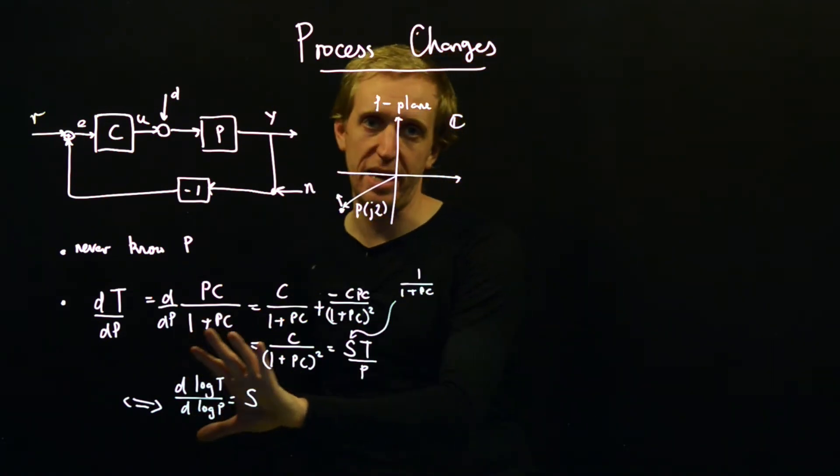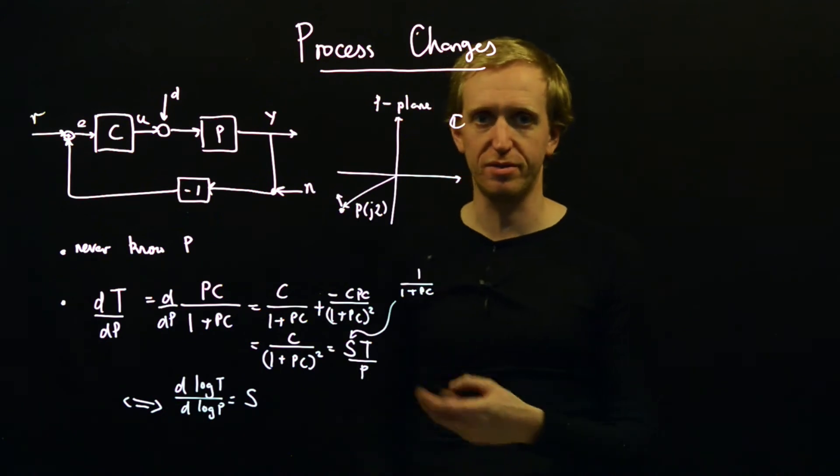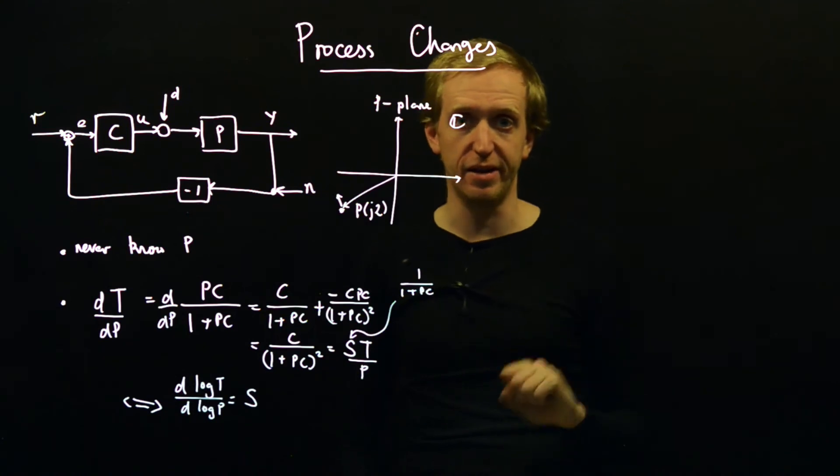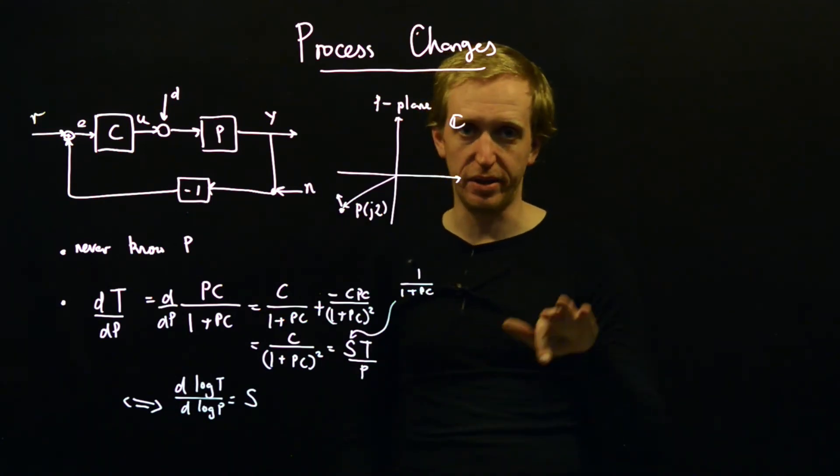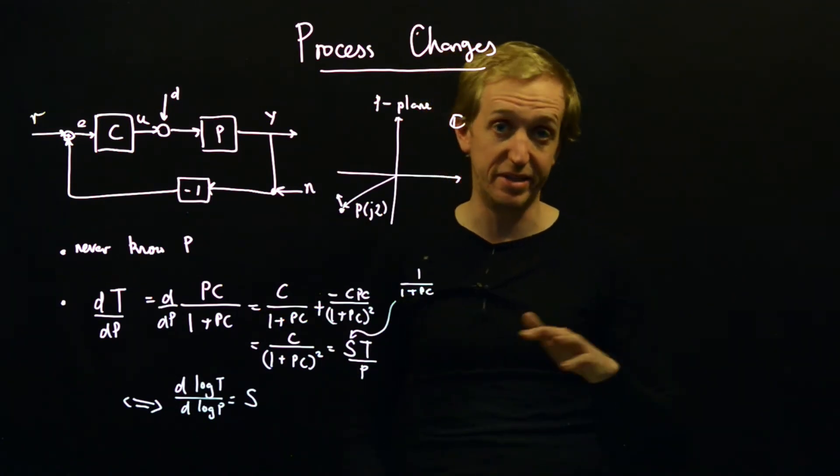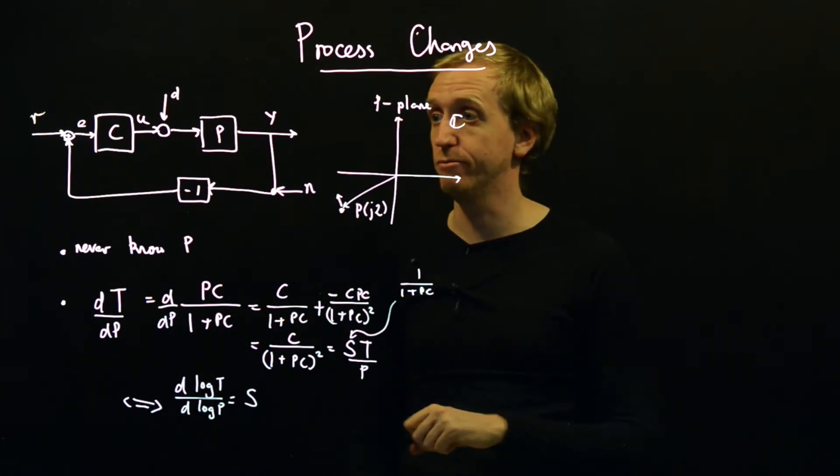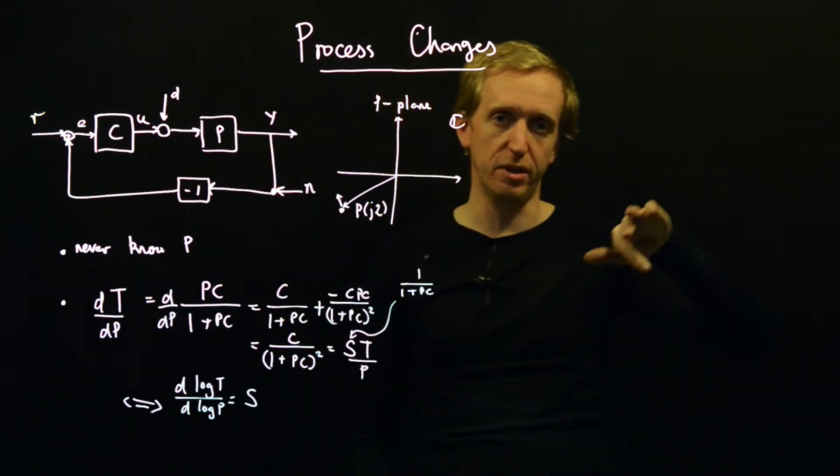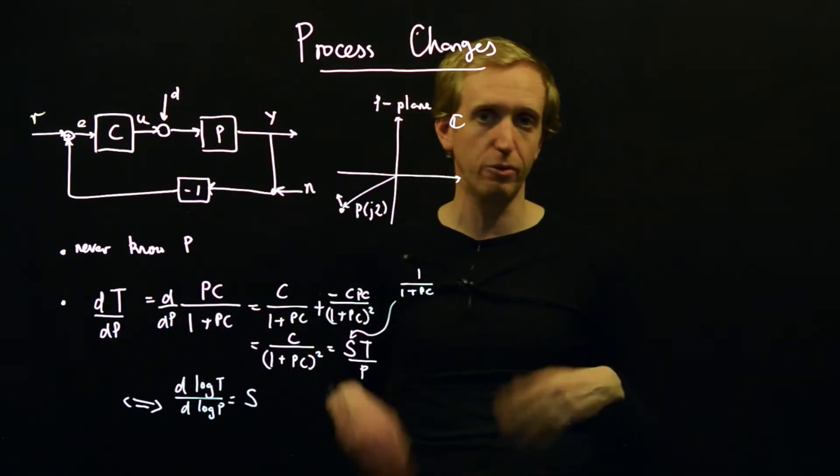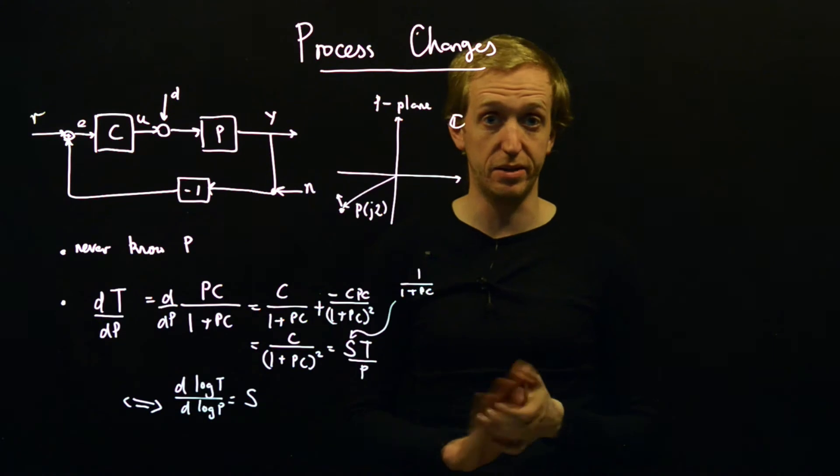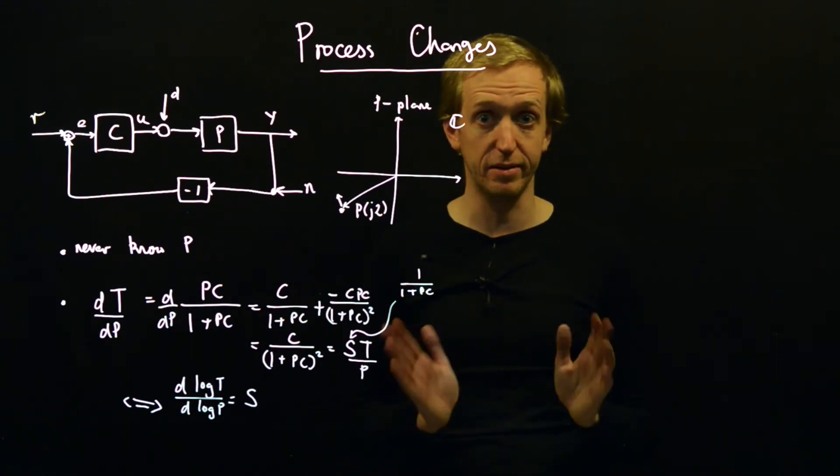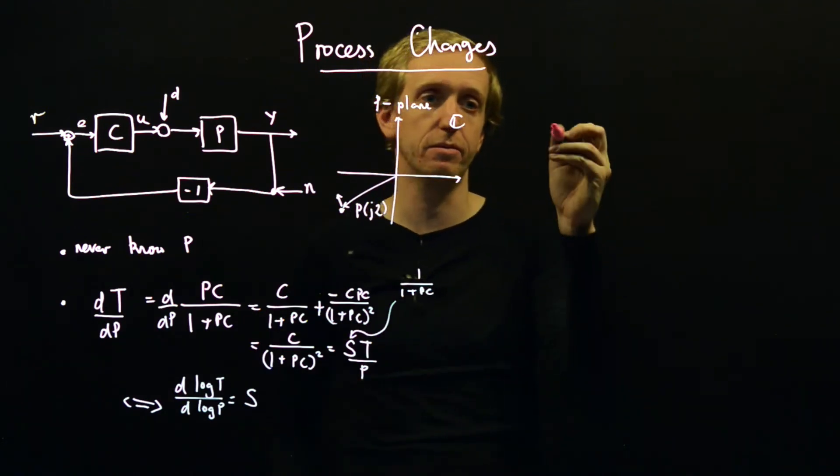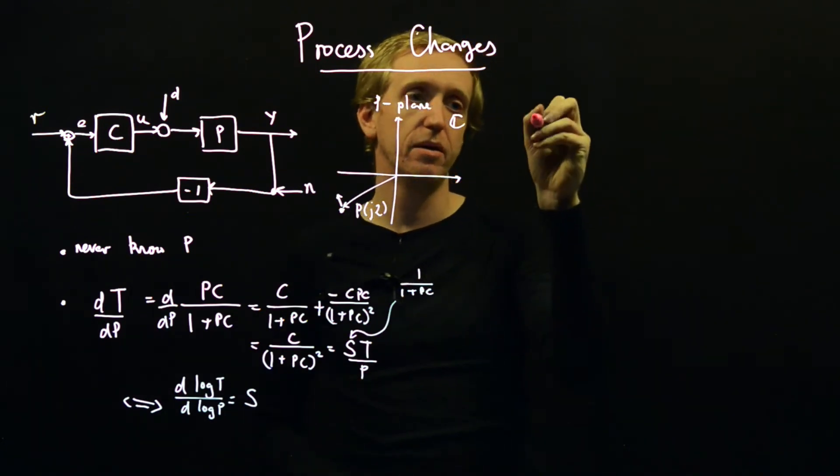As long as we're in an area where the sensitivity function is very small, which corresponded to being very far away from the minus one point, well in fact we can move our process around by huge distances and the sensitivity function will still be small and we'll still get the same disturbance rejection properties. So regions where the sensitivity function is small, which corresponds to regions where you're using high gain feedback, you can handle really quite wild variations in the process P. So that's on the one hand, but what about perturbations in this critical region?